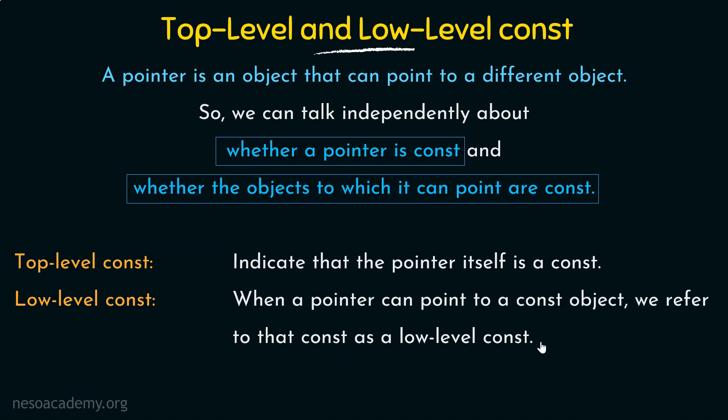Talking in terms of pointers: we already said that pointers can be constants themselves — those are known as top-level constants. We have also seen that pointers can point to other objects which can be constants. The object to which the pointer points, if those objects are also constants, then those are referred to as low-level constants in terms of pointers.